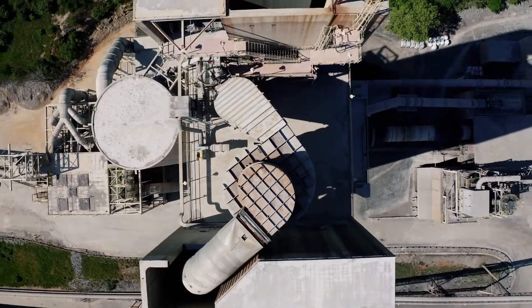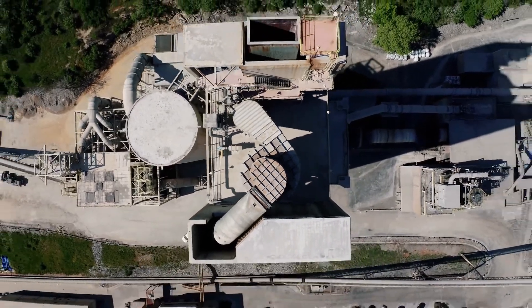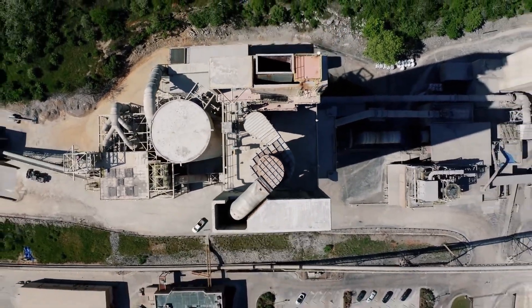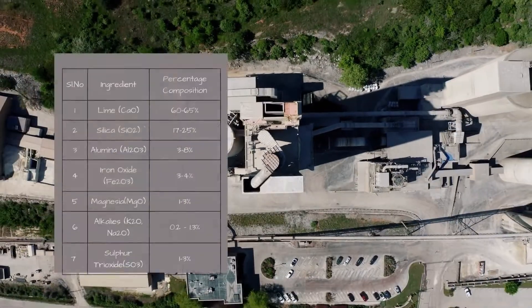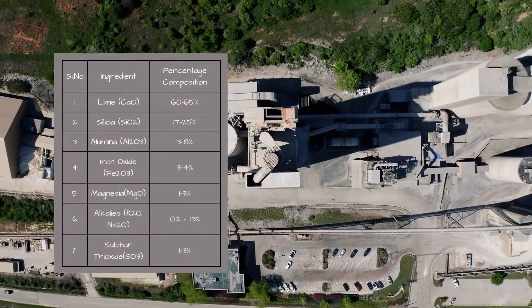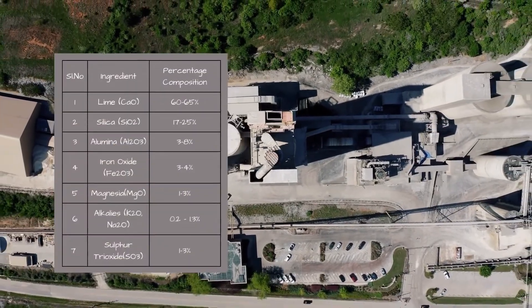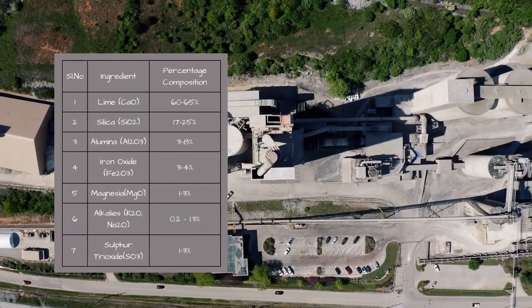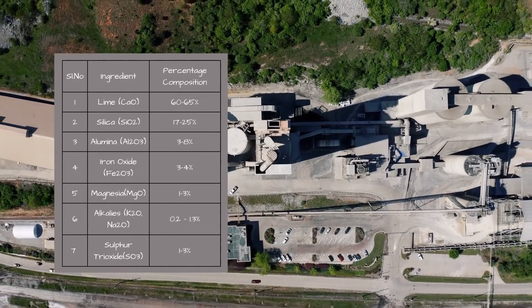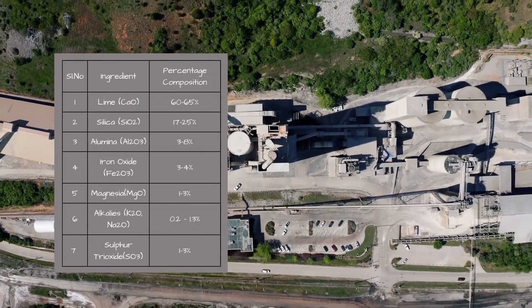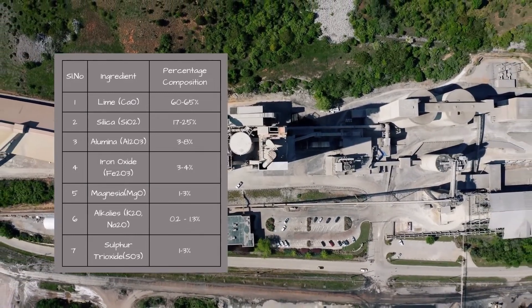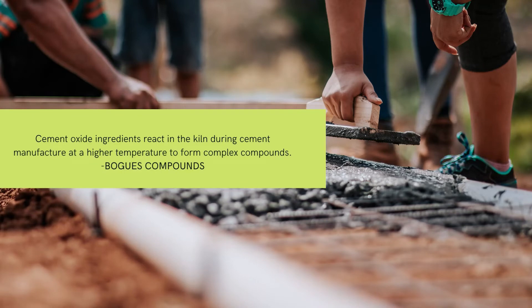The cement manufacturing process employs raw materials like lime, silica, alumina, and iron oxide in correct proportions. These oxides react in the kiln during the cement manufacturing process at a higher temperature to form complex compounds.